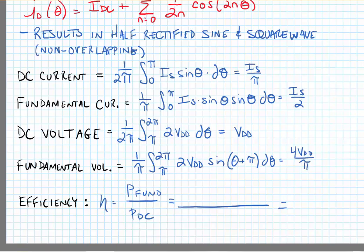Efficiency of the PA can be found by dividing the power delivered at the fundamental frequency by the DC power. This would be the product of the RMS values of the current and voltage of the fundamental divided by the DC power, which is the product of the DC voltage and current.